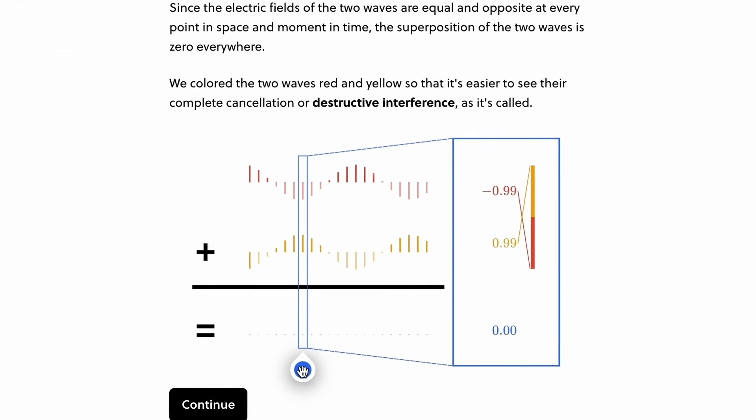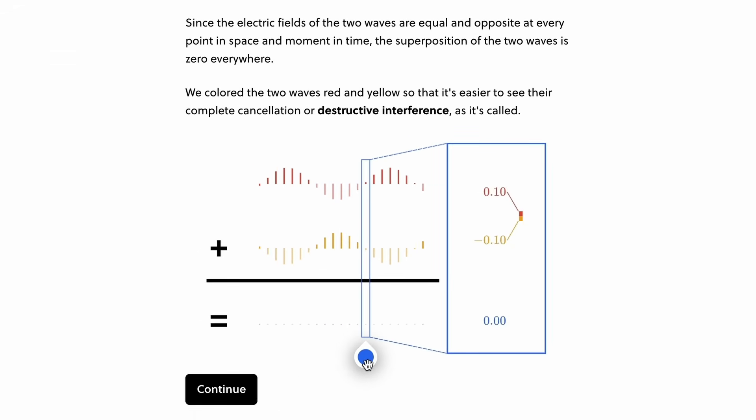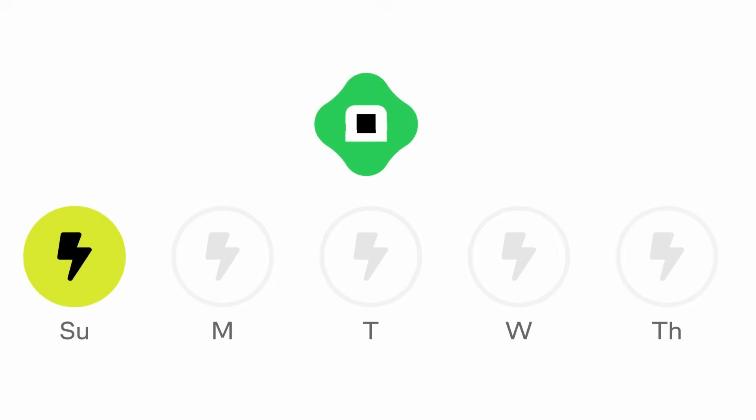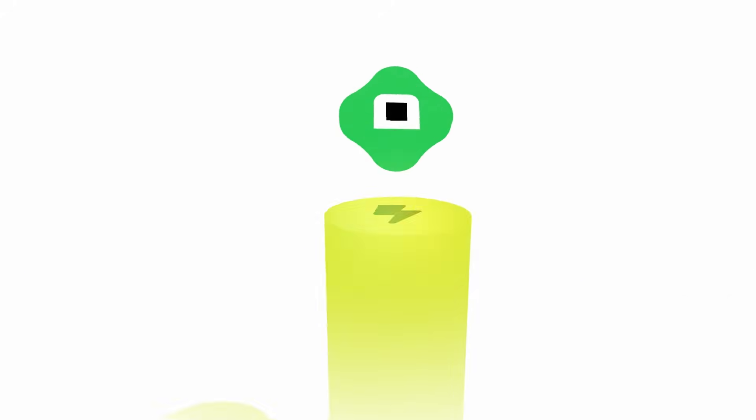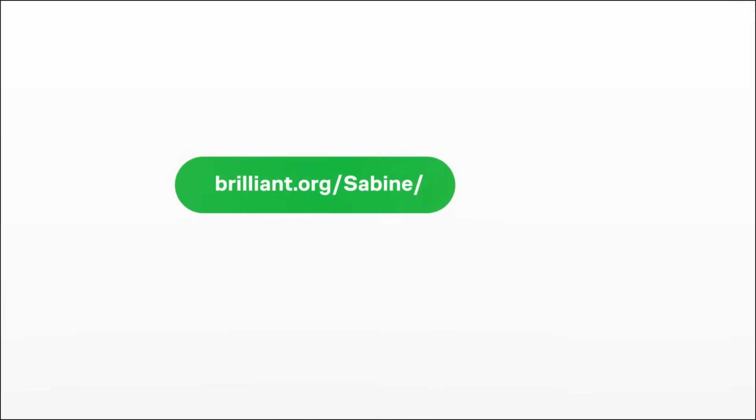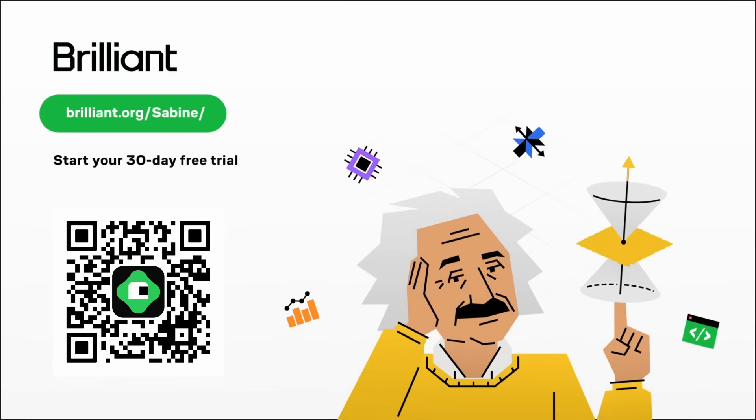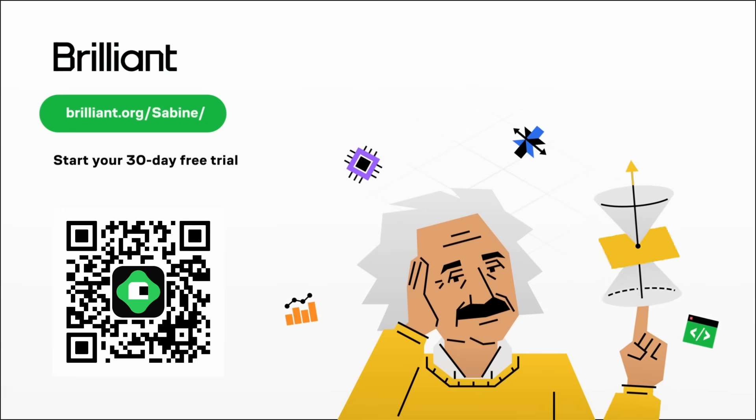It also covers interference, the uncertainty principle, and Bell's theorem. And after that you can continue maybe with their course on quantum computing or differential equations. Sounds good? I hope it does. You can try Brilliant yourself for free if you use my link brilliant.org slash sabine or scan the QR code.